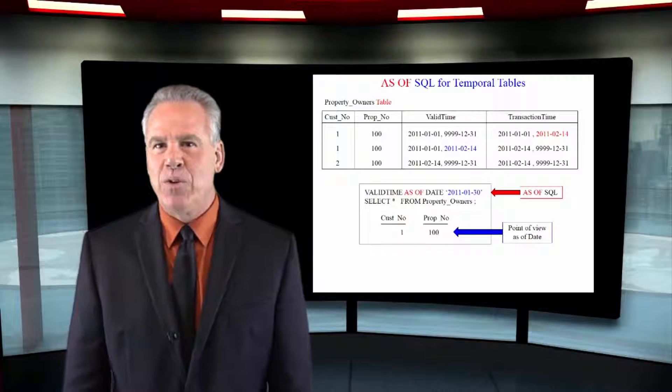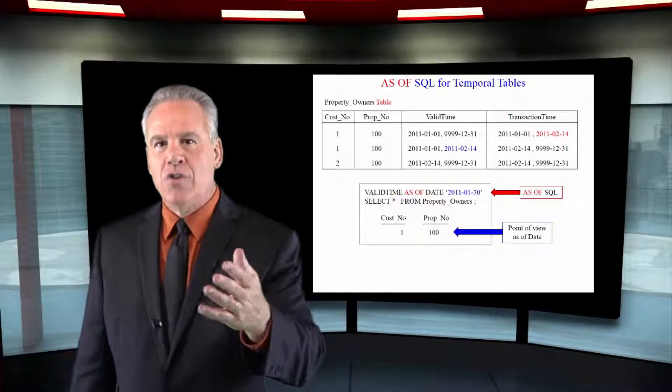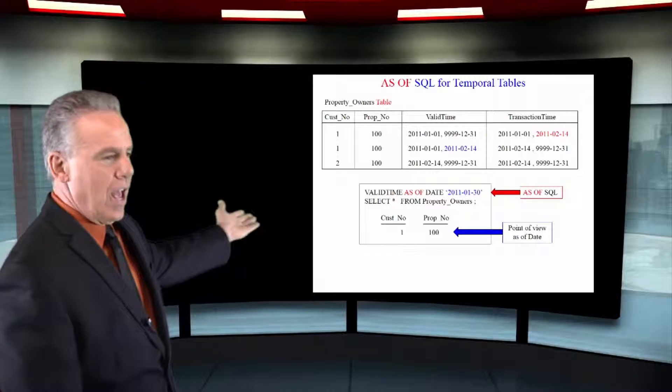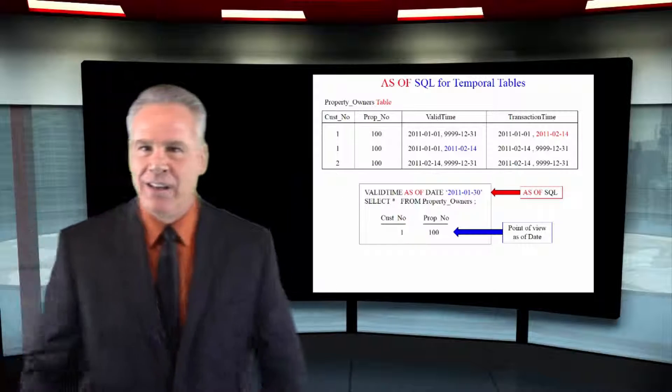Here's some more beautiful extra SQL for temporal tables. Notice here in my query I say, valid time as of the date, January 30th. Select everything from the property owner's table and they say, Teratom owned that. At that point in time,